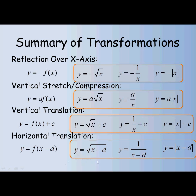For the square root parent function, the horizontal translation looks like the square root of x minus d — all under the square root sign together — compared to the vertical translation where plus c is outside the square root sign. For the reciprocal function, y equals 1 over x minus d, where d is in the denominator rather than added after the fraction. For the absolute value function, it's the absolute value of x minus d, all inside the absolute value sign, compared to plus c outside.